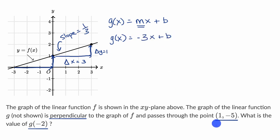Now we need to figure out b. Well, luckily they give us a point, one comma negative five. So we know that when x is equal to one, -3 times 1 plus b, then g(1) is -5. So this is going to be equal to -5. And so we can solve for b. -5 is equal to -3 + b. We can add three to both sides, and we get -2 is equal to b.